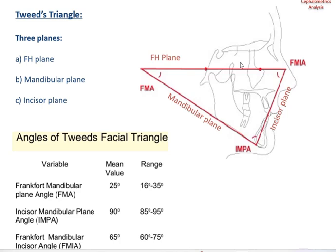The three planes in Tweed's analysis are the Frankfurt horizontal plane (FH plane), the mandibular plane, and the incisor plane. The Frankfurt horizontal plane runs from orbitale to porion. The mandibular plane runs from gonion to gnathion. A line running through the long axis of the lower incisor intersecting the Frankfurt horizontal plane gives you the incisor plane.